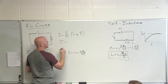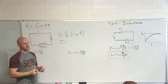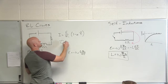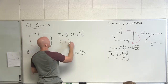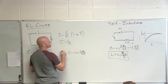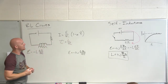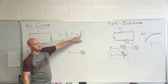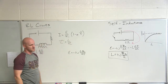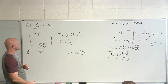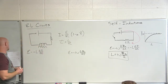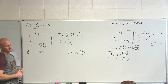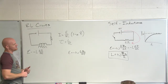Tau here, if you recall with RC circuits, tau equals R times C. For RL circuits, tau equals L over R. That's how we calculate it for plugging into the equation. The inductance is measured in henrys.